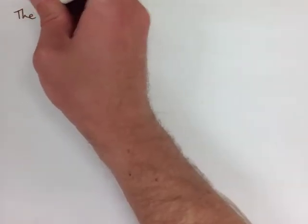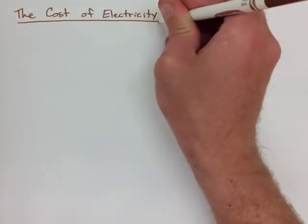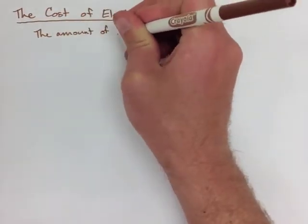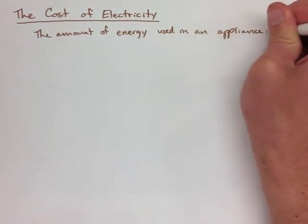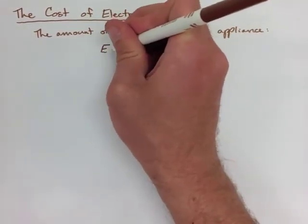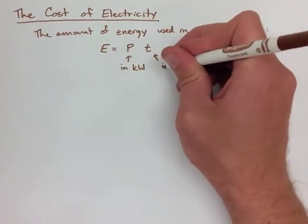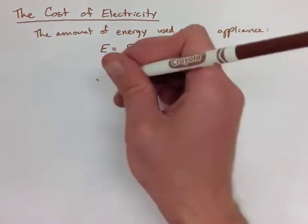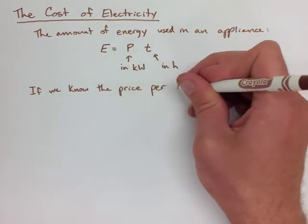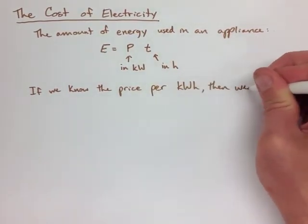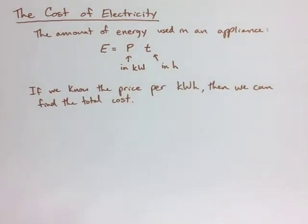The next thing we're going to look at is the cost of electricity. Now, for this, we need to find the amount of energy that's being used by an appliance. This is a simple formula, which is E equals P T, where P is power and T is time. However, we normally measure in kilowatts and hours for this equation, not watts and seconds. The reason being is that a lot of the prices that we're given are in kilowatt hours. So, if we know the price per kilowatt hour, then we can find the total cost of the appliance.